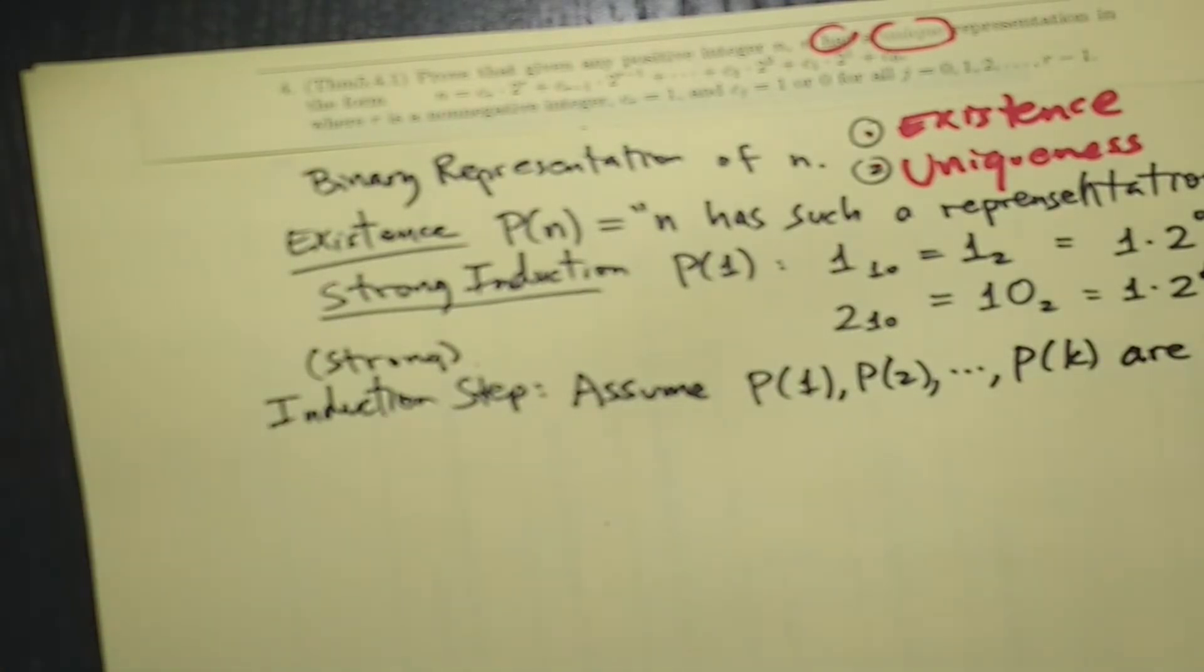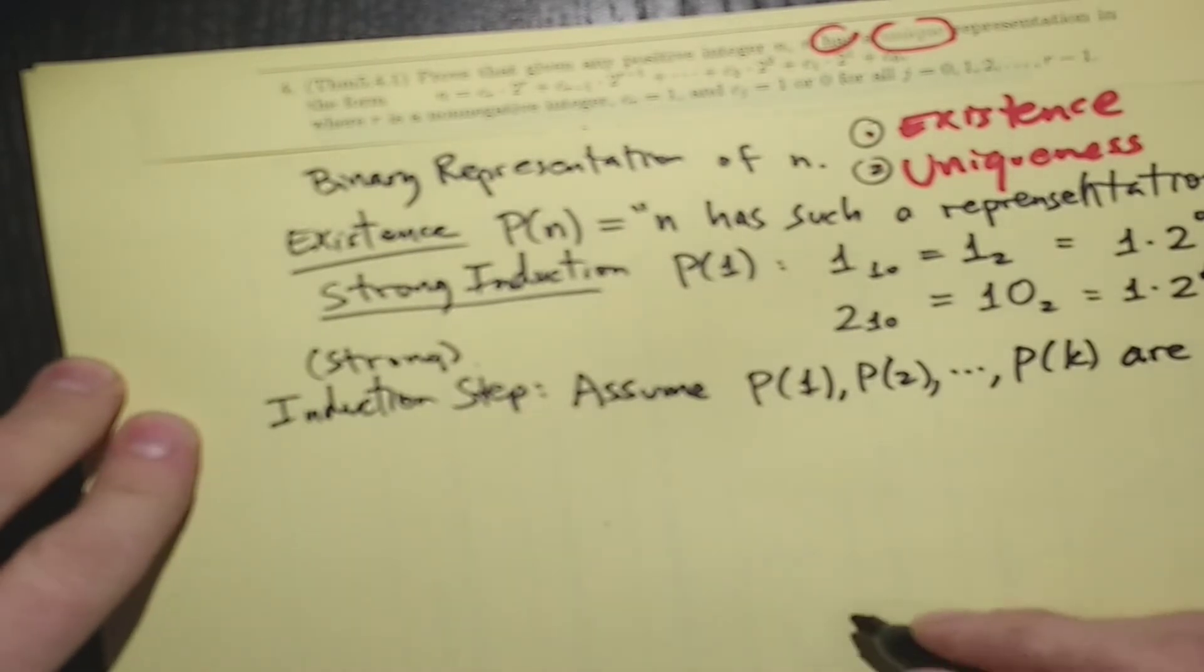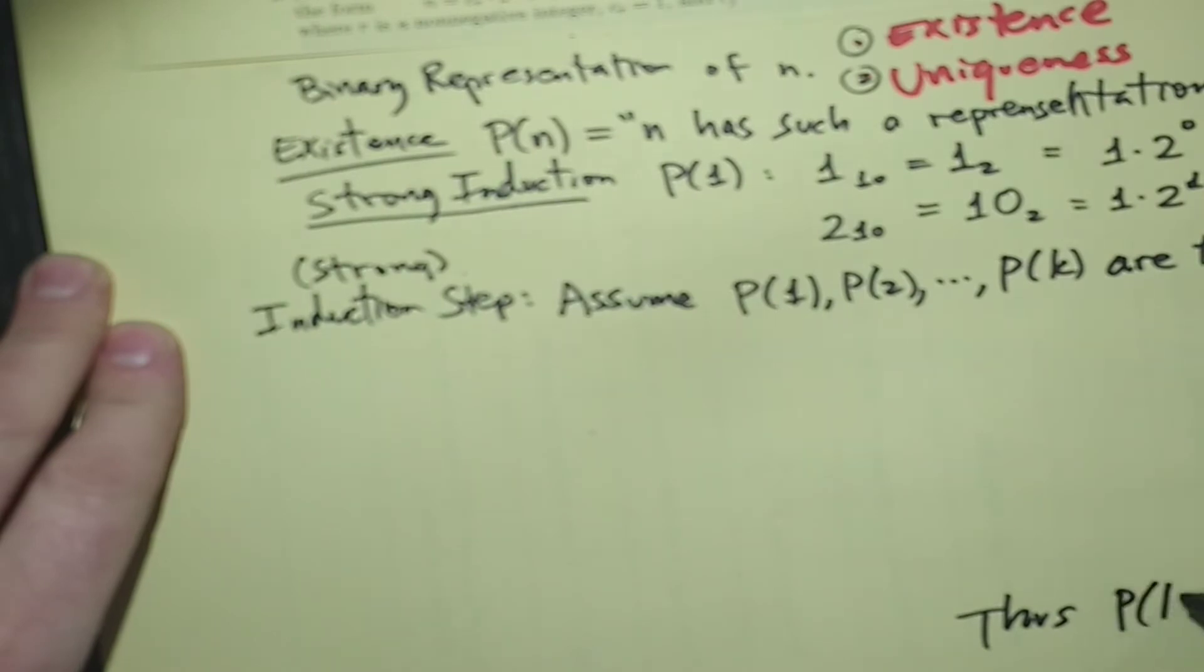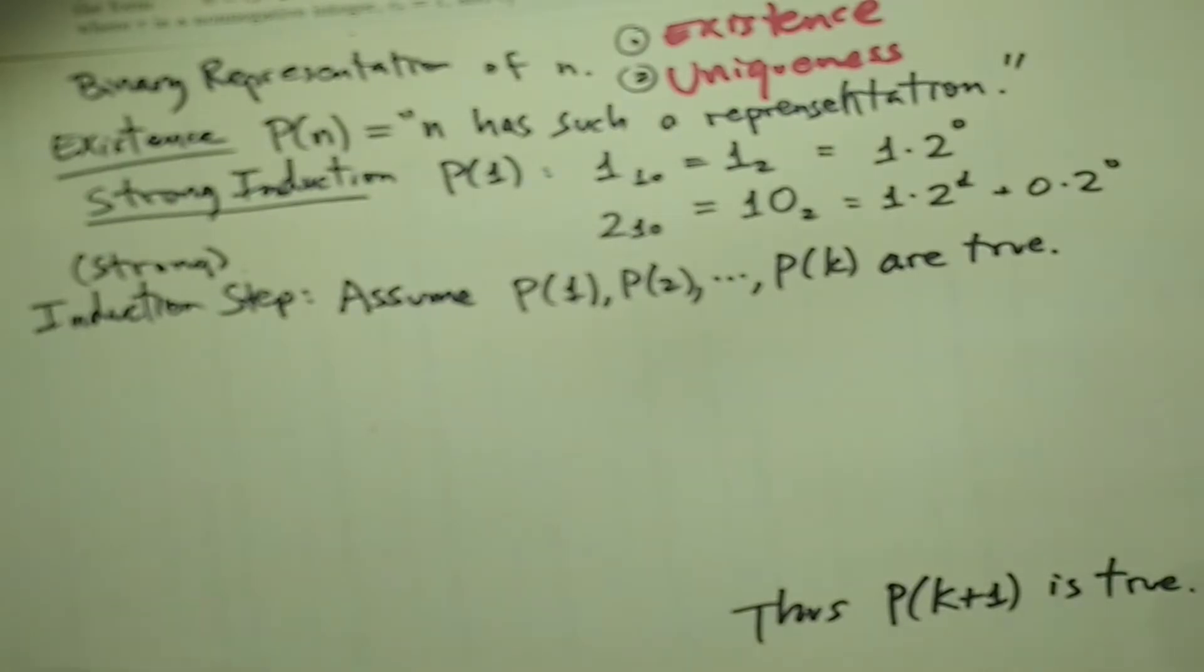That just means that every number from 1 to k has a binary representation. And we'd like to conclude that P(k+1) is true as well. So that's what we need to do. And it's not going to be hard. We're going to assume that every number less than k+1 has a binary representation. And we'll prove that k+1 also has a binary representation. So here we go.